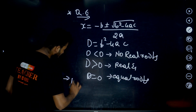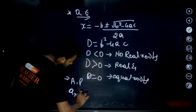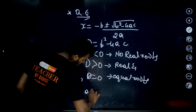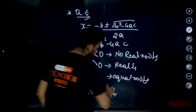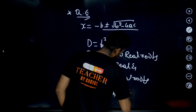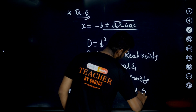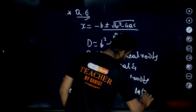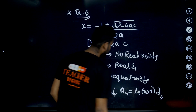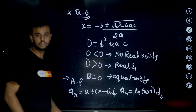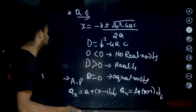Then AP — arithmetic progression. The nth term is Aₙ = A + (N − 1) × D. These two formulas are very important. Focus on this. QE and AP are done.